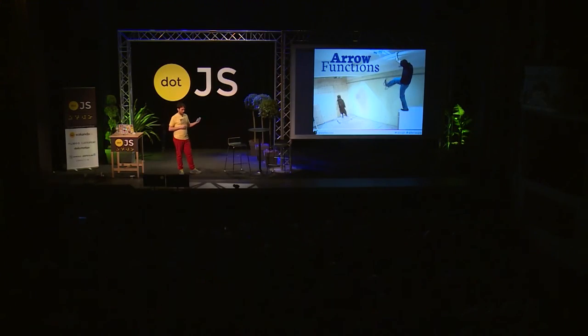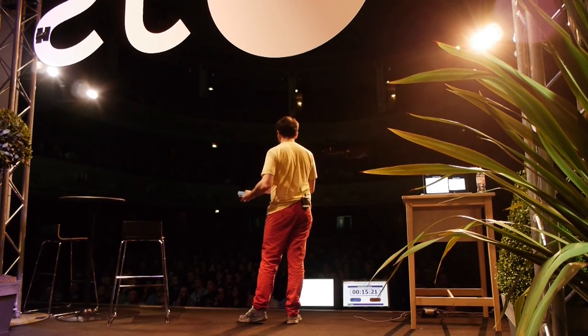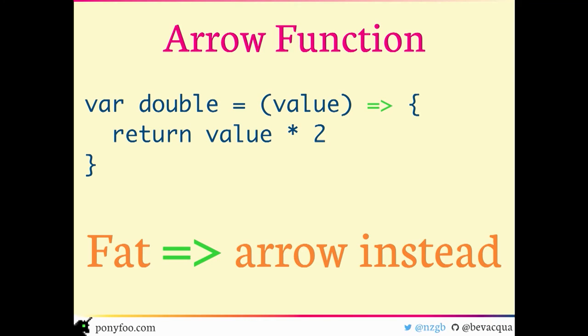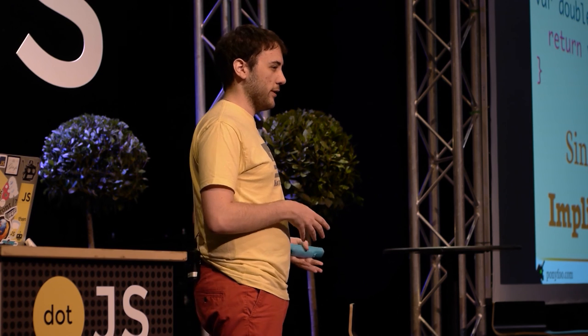Then there are arrow functions. Arrow functions are basically the same as regular functions but they're shorter — there's no function keyword; instead you use an arrow, hence the name. There are a lot of different ways to write arrow functions. For example, if you have a single parameter you can drop the parentheses, or if you're going to return a single expression you can get rid of the return keyword and the block — just use an expression and the return and block will be implicit, so the value will still be returned.